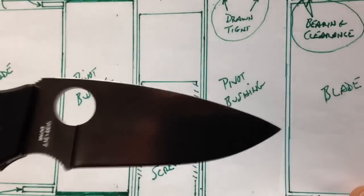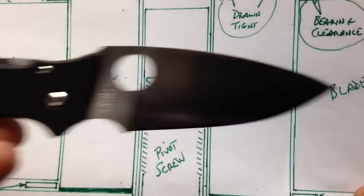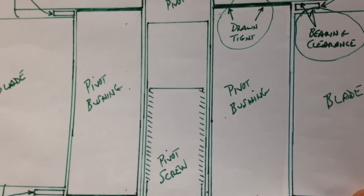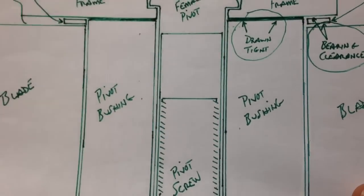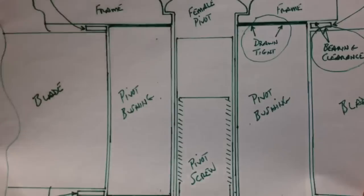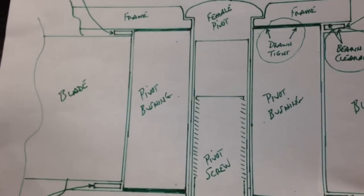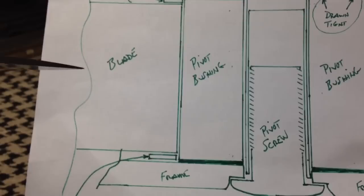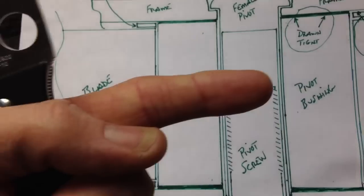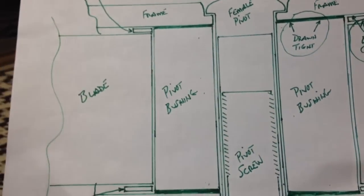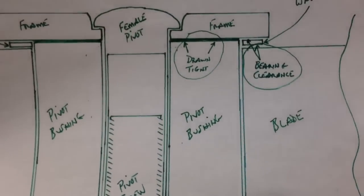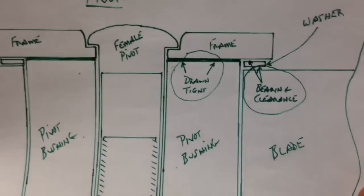Those are so precise the blade can't really move in this direction hardly at all and that is a function especially on a frame lock or liner lock like the Sebenza would be. When that lock engages against the tang of the blade back here it's pushing in this direction which also because of perpendicularity makes the blade more rigid in side to side play.